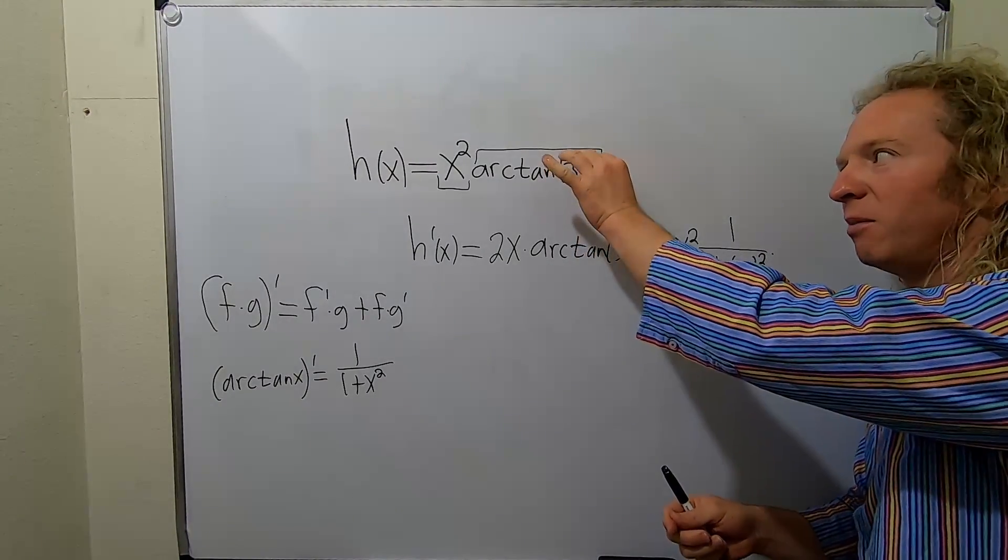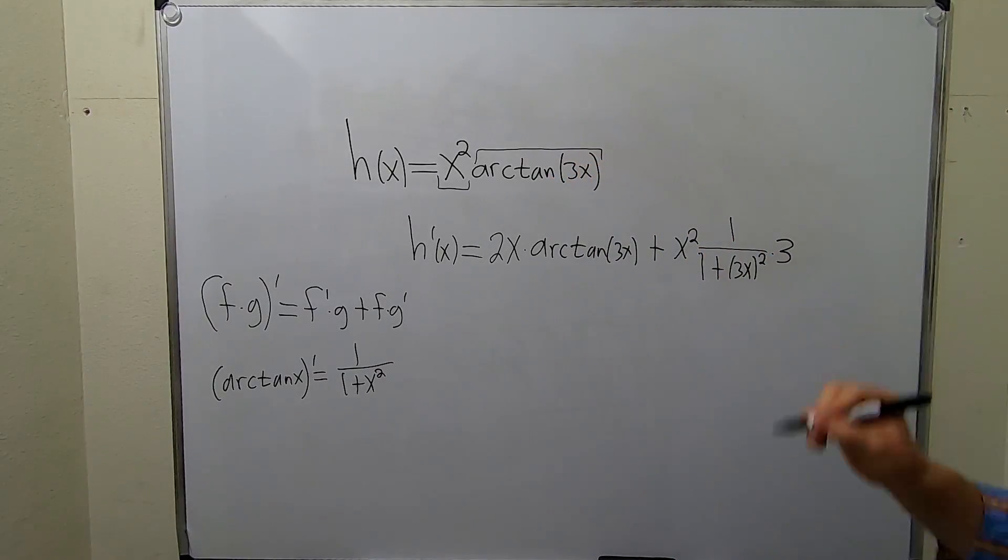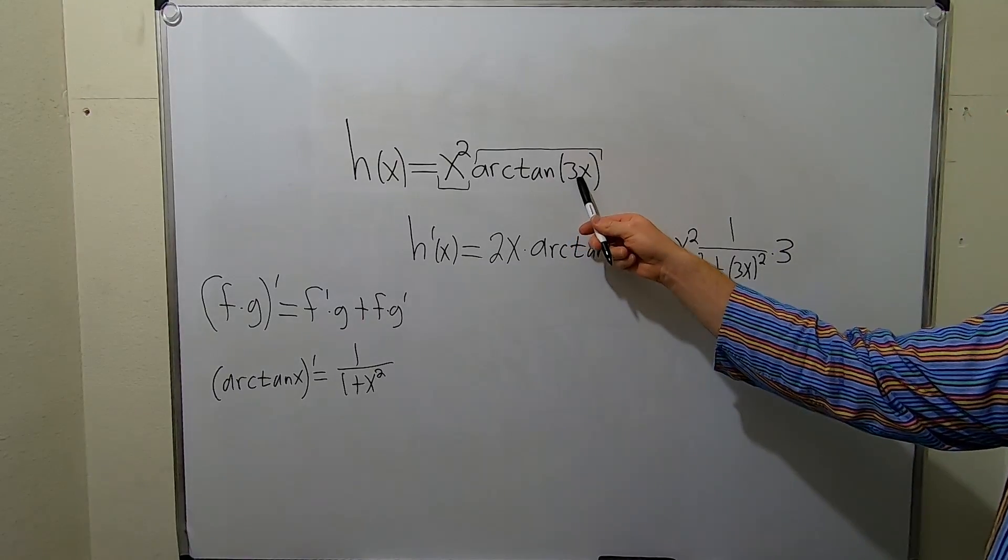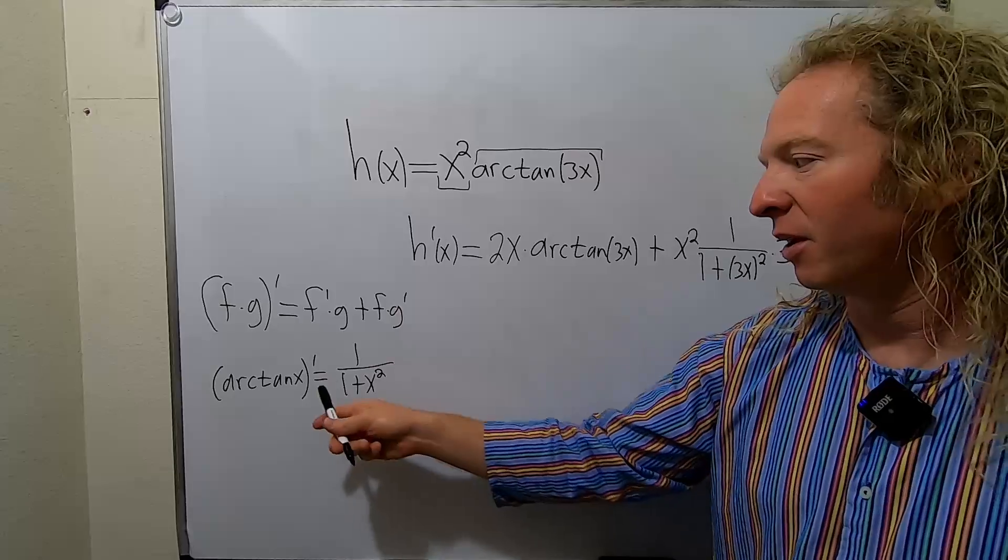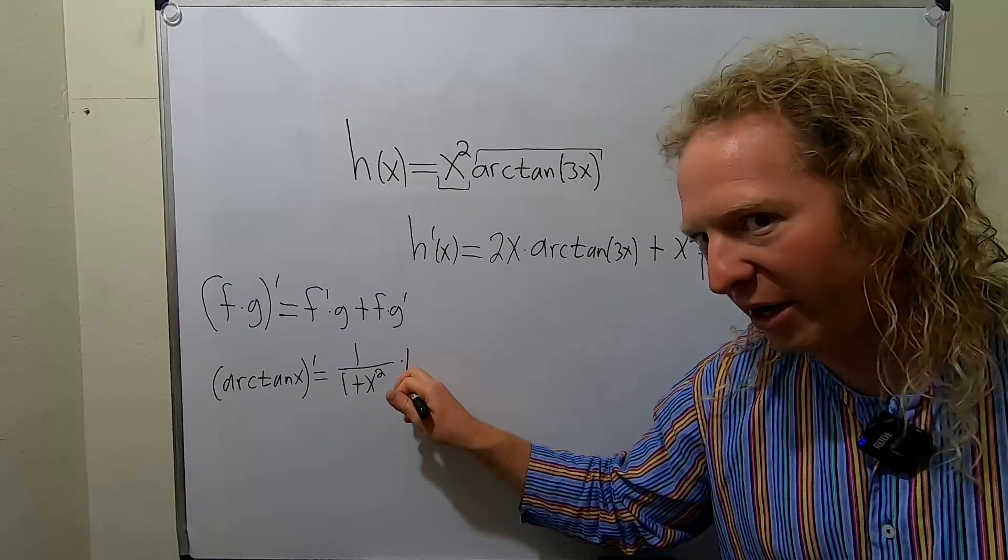There's a chain rule because it's 3x. So the derivative of 3x is simply 3, and that's because the derivative of x is 1. If it was just arctangent of x, you could think of the chain rule as being applied in that case as well. Check it out. It's 1 over 1 plus x squared, times the derivative of x, which is 1.